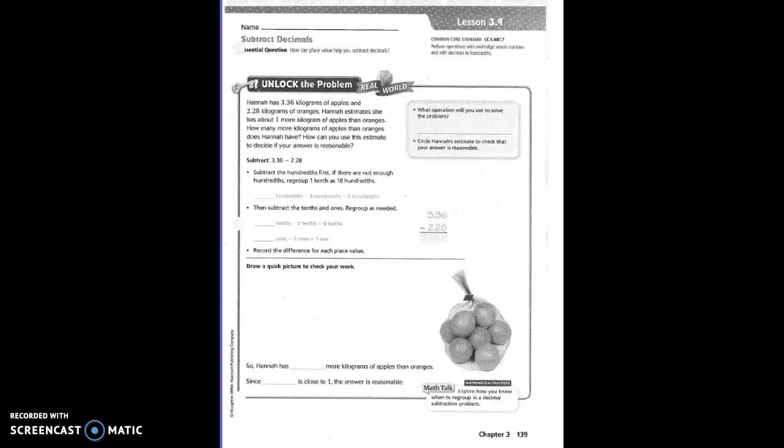Chapter 3, Lesson 9. Hannah has 3 and 36 hundredths kilograms of apples and 2 and 28 hundredths kilograms of oranges. Hannah estimates she has about 1 more kilogram of apples than oranges. How many more kilograms of apples than oranges does Hannah have? How can you use this estimate to decide if your answer is reasonable? First, we need to decide what operation to use to solve the problem. Subtraction.